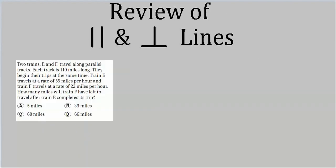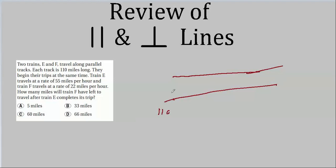Now we have a classic train problem. Two trains are on parallel tracks, each 110 miles long. Let's draw a quick picture of two parallel tracks. Train E travels at 55 mph and Train F at 22 mph. We assume they each start at the beginning of their 110-mile track.